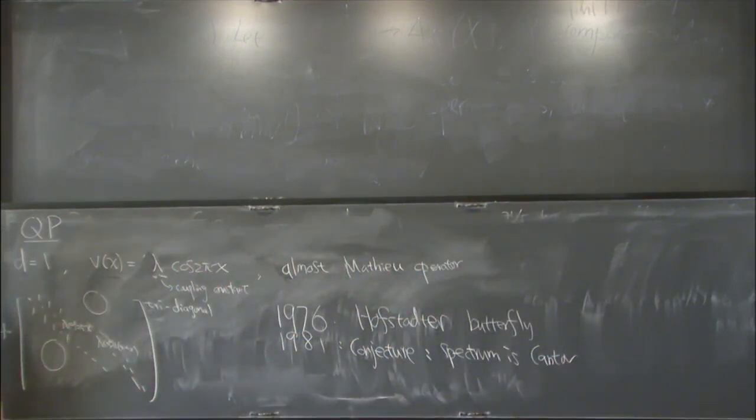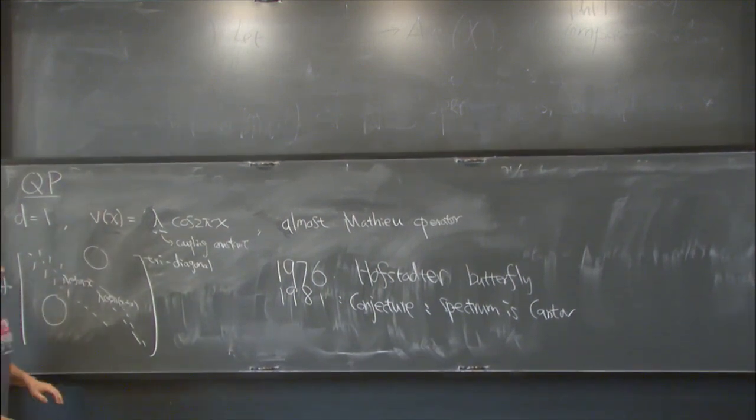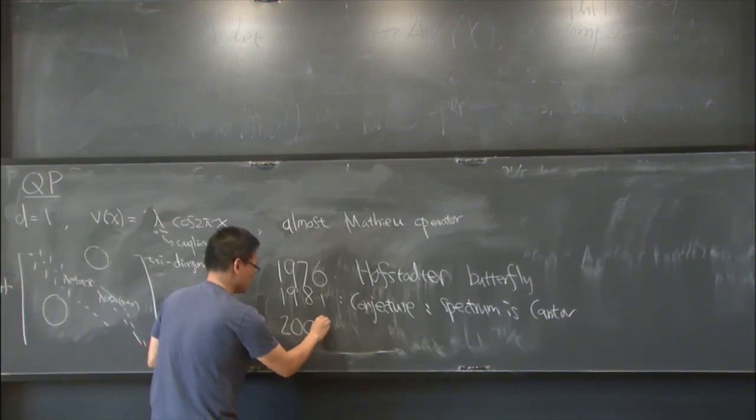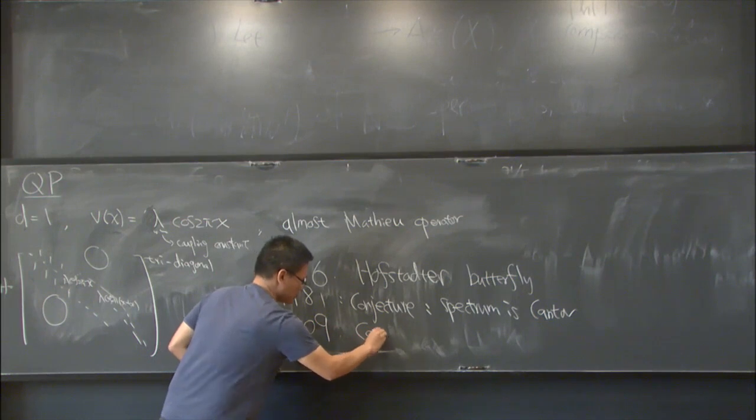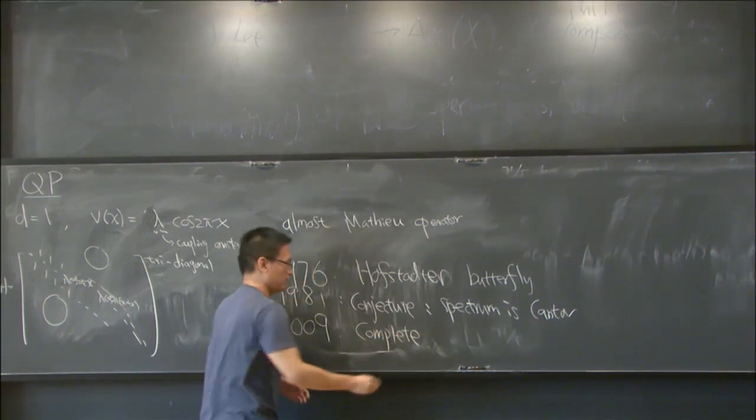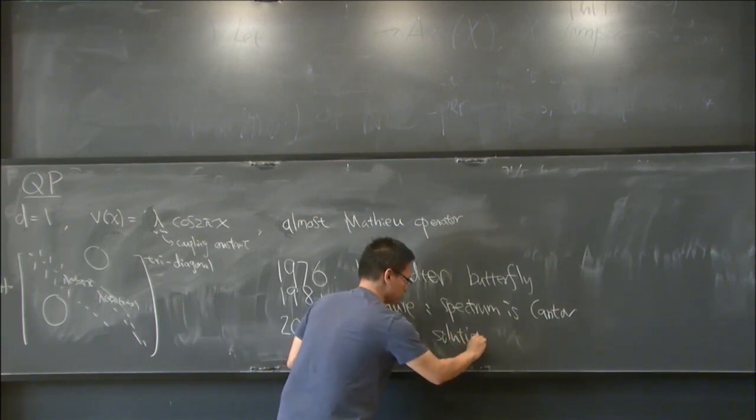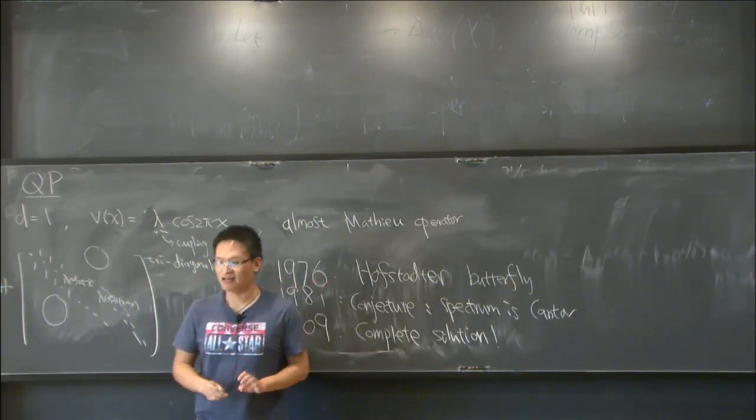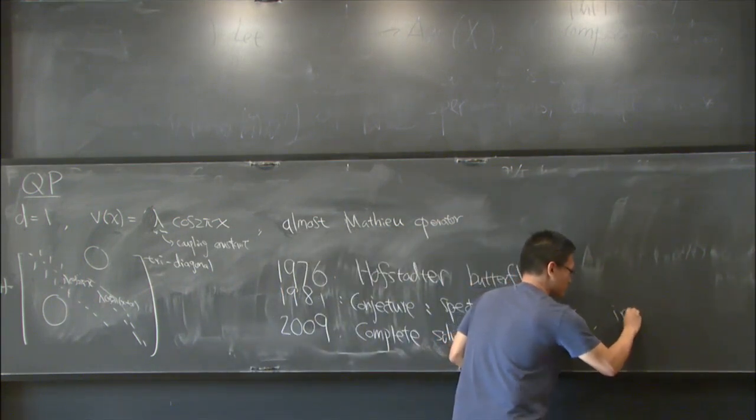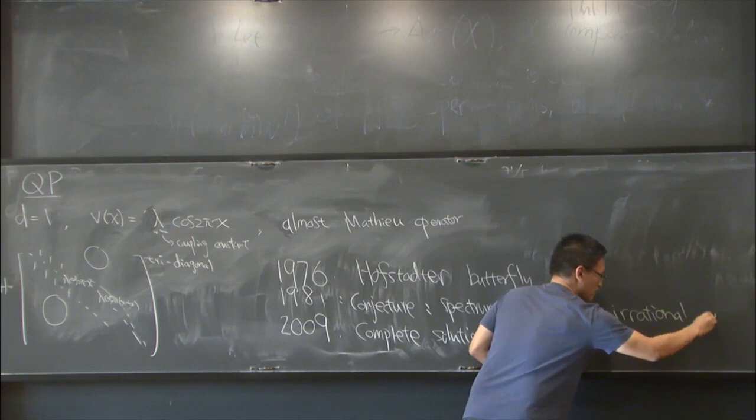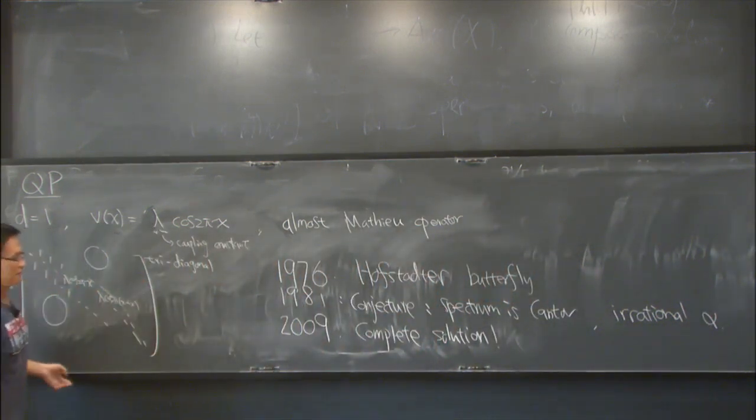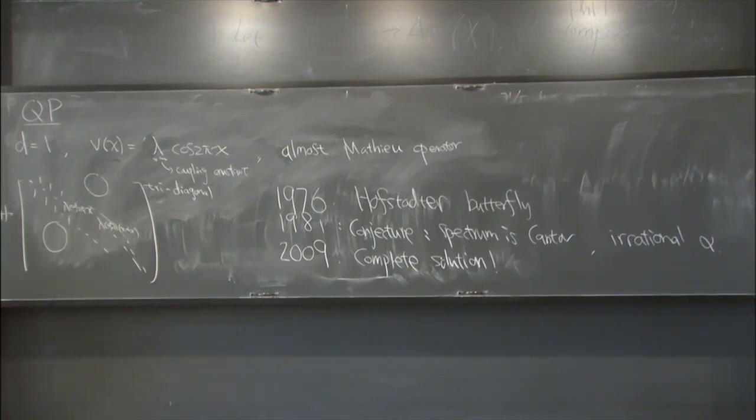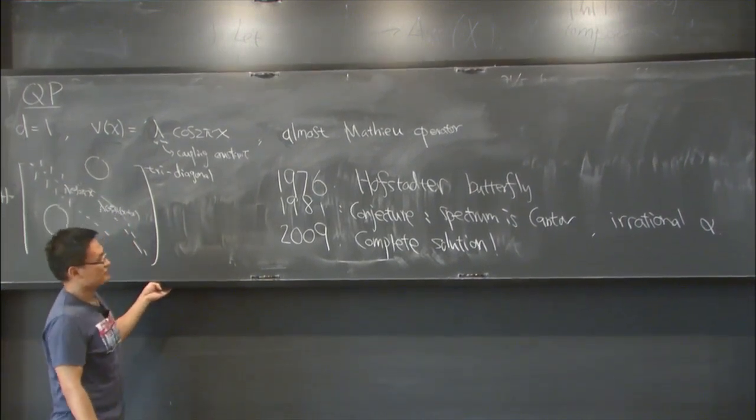So it has a very complicated fractal structure. And now this picture is known as the Hofstadter butterfly. You could look up, there is a colorful version of this picture, which is even better. It was conjectured mathematically in 1981 that this spectrum is a Cantor set. Of course, for the non-trivial coupling constant λ and non-trivial α. So this was proved in 2009. The complete solution was given in 2009 for irrational α. If α is rational, then we have the band structure.